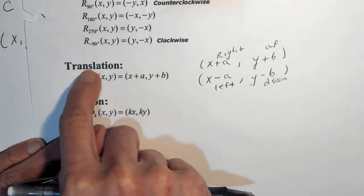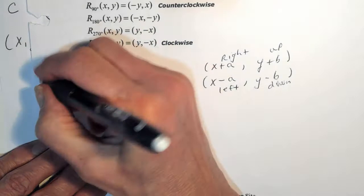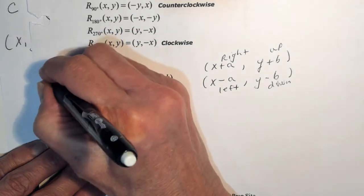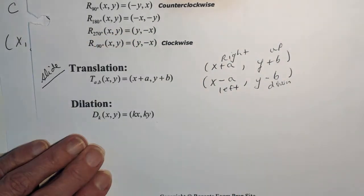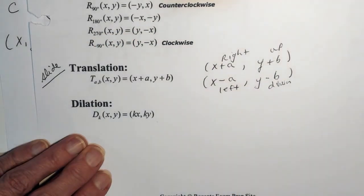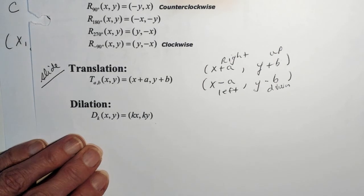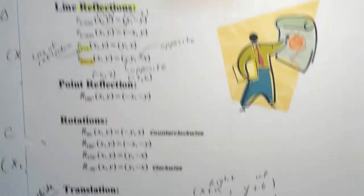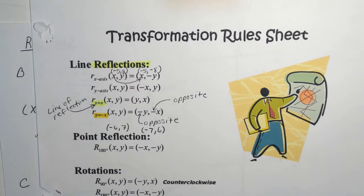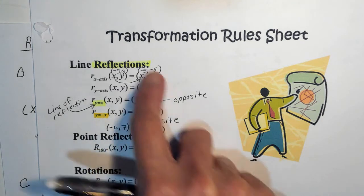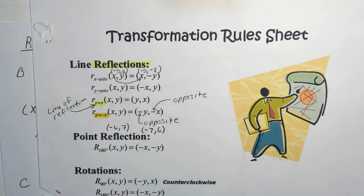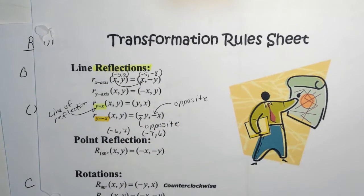Translations are what we just did — that's when we slide something. Now let's do reflections. Here are our reflection rules.